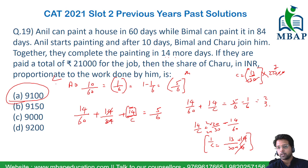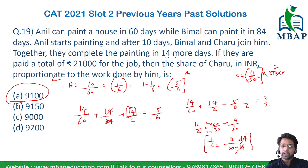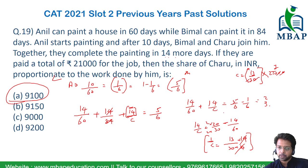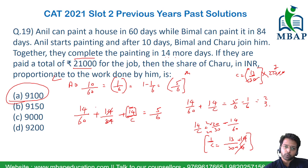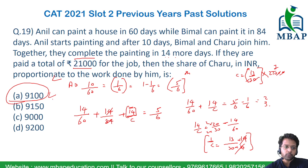So C's share = 13/30 × 21,000 = 7 × 13 × 100 = 9,100. The answer is option A, which is 9,100. To summarize: first find C's one-day work rate, then multiply by 14 days to get 13/30 of total work, and finally take 13/30 of 21,000 to get C's share of 9,100.